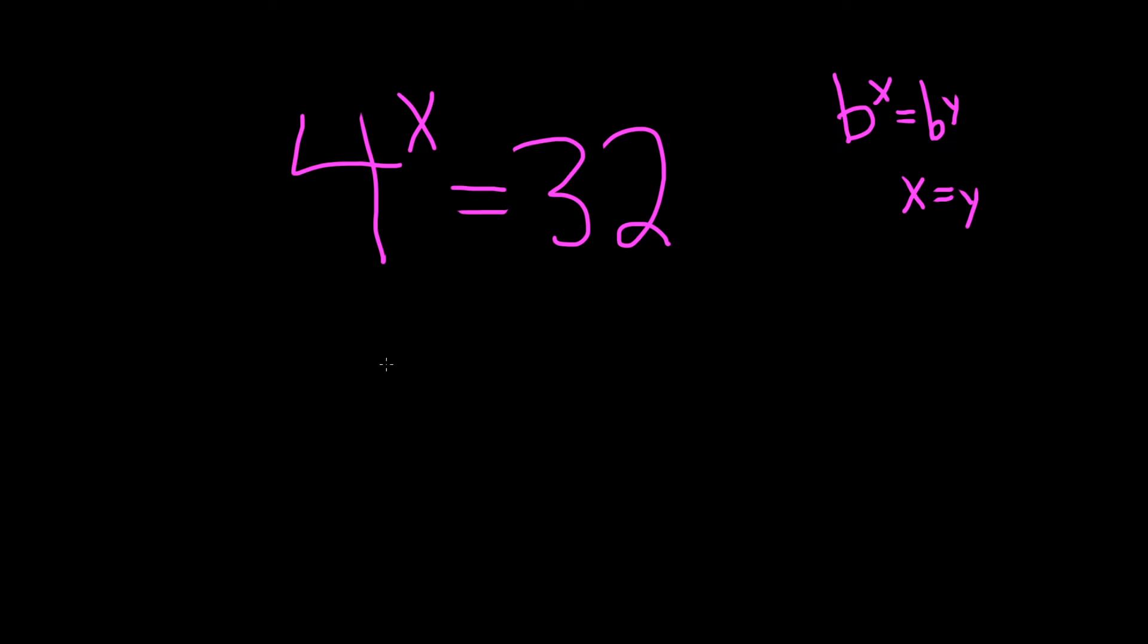So remember that 2 squared is equal to 4. So we'll replace the 4 with a 2 squared and keep our x here. And then 32 is actually 2 to the fifth. So this is 2 to the fifth power.